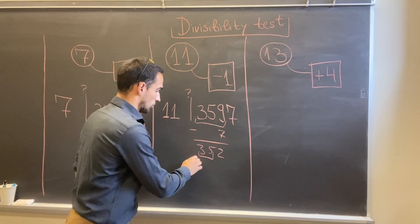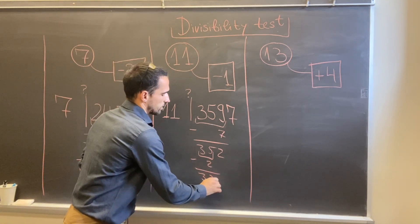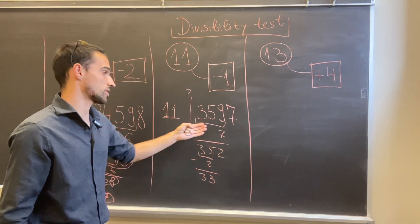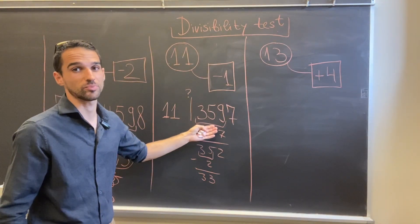Now one more time I should take 35 and subtract 2, and I get 33. So obviously 33 is divisible by 11, which means that my initial number is also divisible by 11.